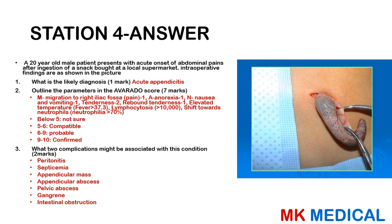This is most likely acute appendicitis — the vermiform appendix is shown in the picture. The Alvarado score uses the mnemonic MANTRELL: M = migratory pain from umbilicus to right iliac fossa (score 1), A = anorexia (1), N = nausea and vomiting (1), T = tenderness (2), R = rebound tenderness (1), E = elevated temperature greater than 37.3°C (1), L = leukocytosis greater than 10,000 with shift to neutrophils (2). Total: less than 5 = uncertain, 5–6 = compatible, 7–8 = probable, 9–10 = confirmed.